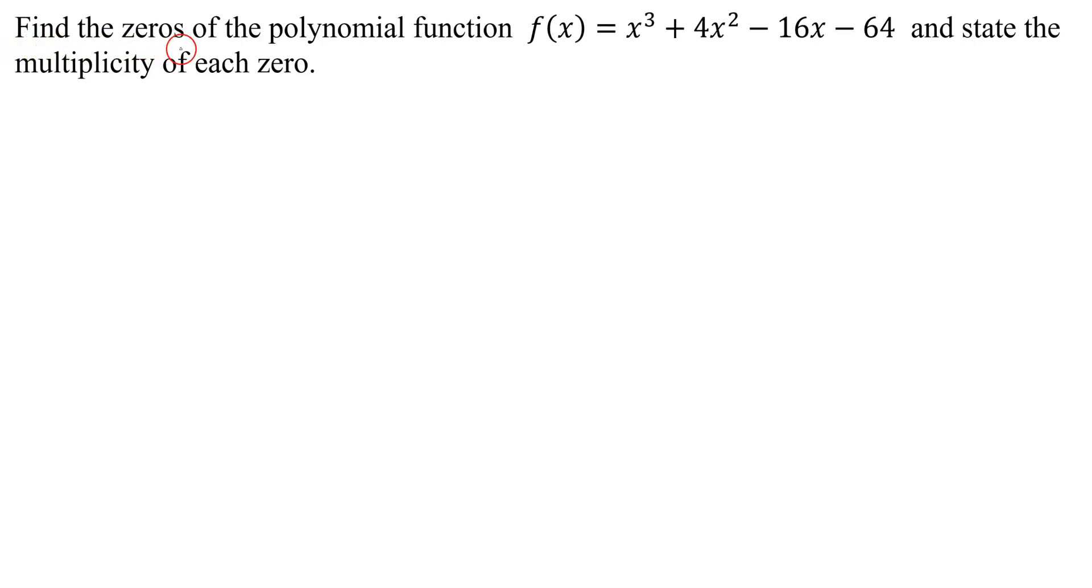In this problem, we need to find the zeros of the polynomial function f(x) = x³ + 4x² - 16x - 64, and we also need to state the multiplicity of each zero.